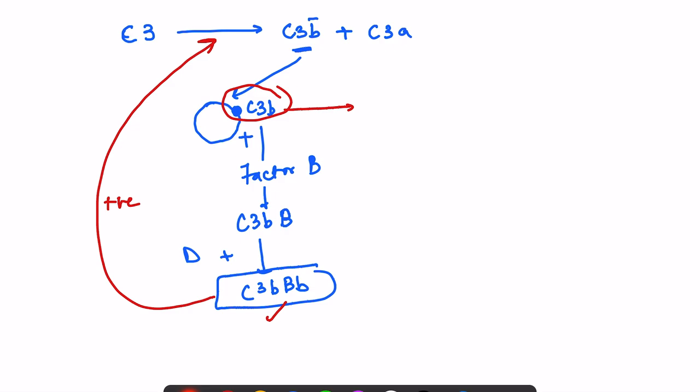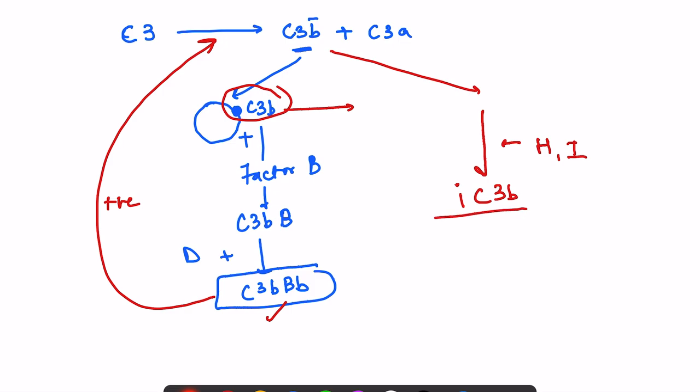Since C3B is formed spontaneously, if no microbe is available or if it binds to a host cell, it is inactivated by Factor H and Factor I, forming inactivated C3B which is further digested by proteases. This acts as a control to prevent runaway positive feedback activation.